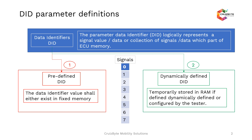If a number is given to a particular signal and that number is permanently referenced with that signal, it is called a predefined DID. A predefined DID corresponds to a particular unique ID which consists of a number of predefined signals at fixed positions.